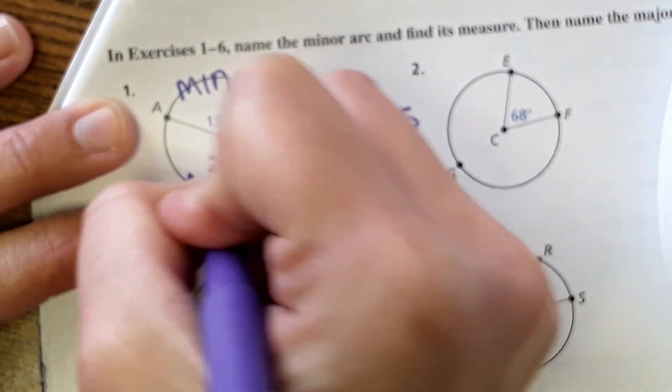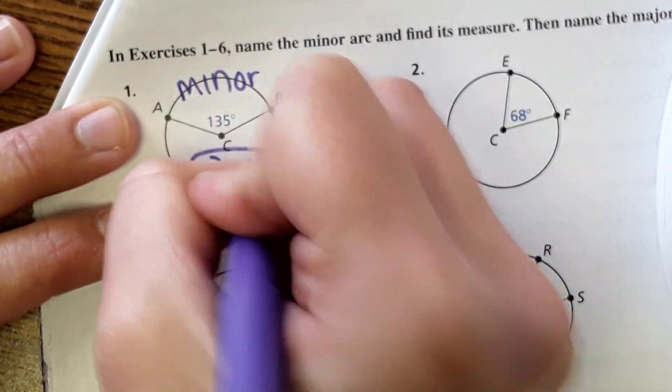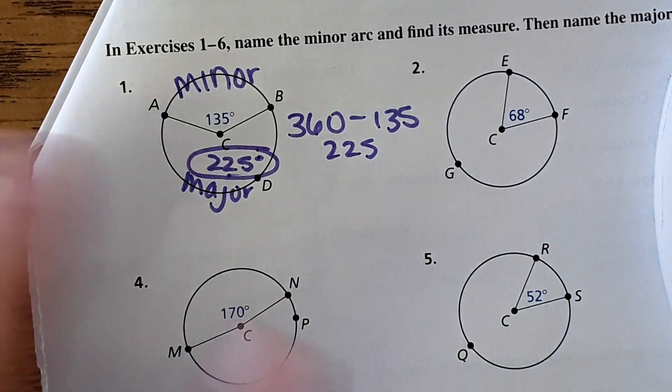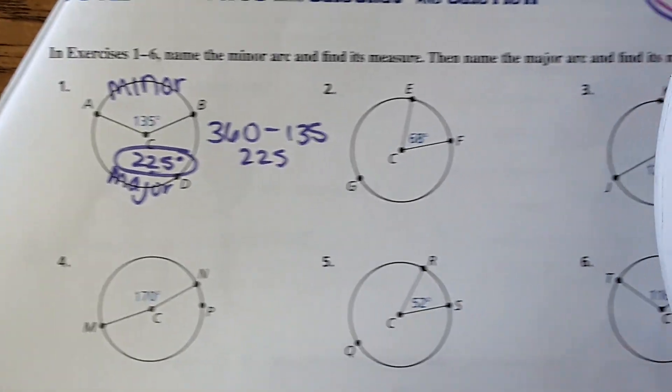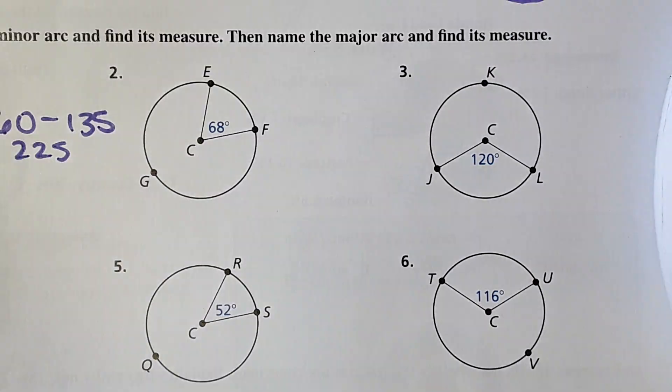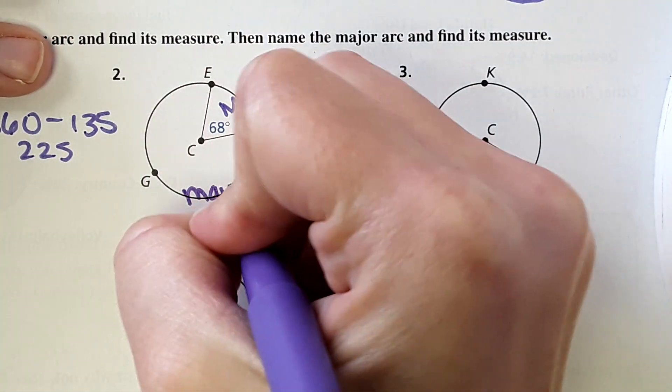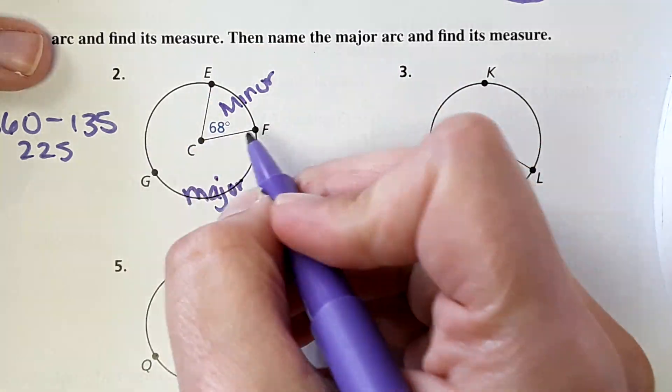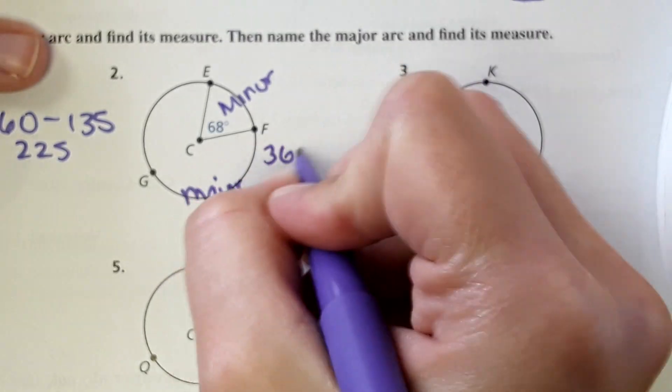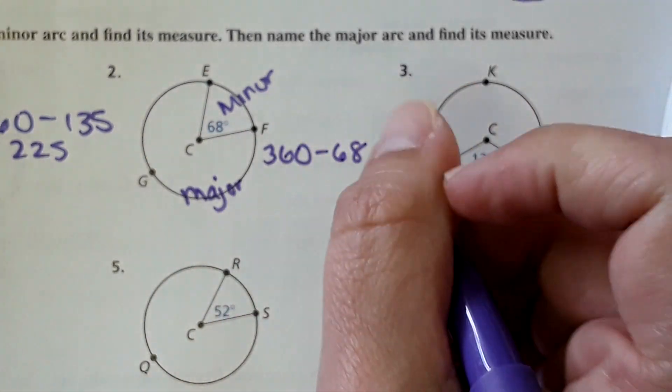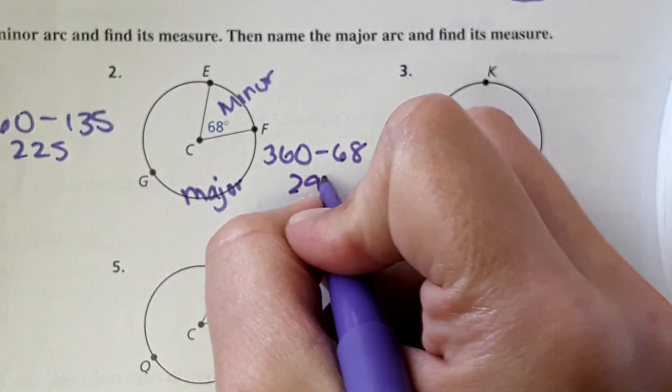Number two, same thing. Label the minor and the major. So this would be minor, this is major, and then we would do 360 minus 68 to figure out this arc over here, and so it would be 292 degrees.